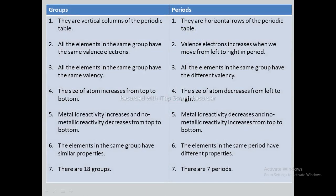Differences between group and period: groups are vertical columns whereas periods are horizontal rows. All elements in the same group have the same valence electron, whereas valence electron increases when we move from left to right in a period. All elements in the same group have the same valence, whereas all elements in the same period have different valence. The size of an atom increases from top to bottom in a group, whereas atomic size decreases from left to right in periods. In groups, metallic character increases and non-metallic character decreases from top to bottom, whereas in periods, metallic reactivity decreases and non-metallic reactivity increases. Elements in the same group have similar properties, whereas elements in the same period have different properties. There are 18 groups and 7 periods in the modern periodic table.